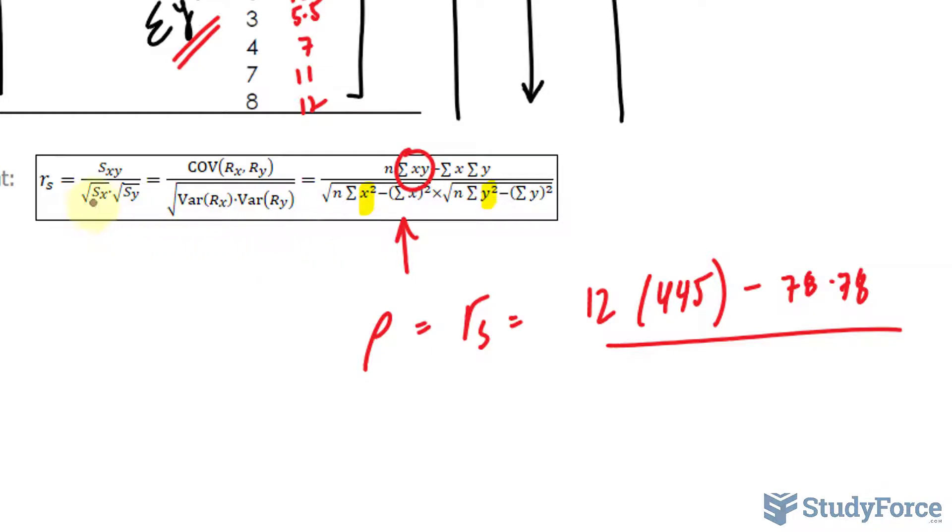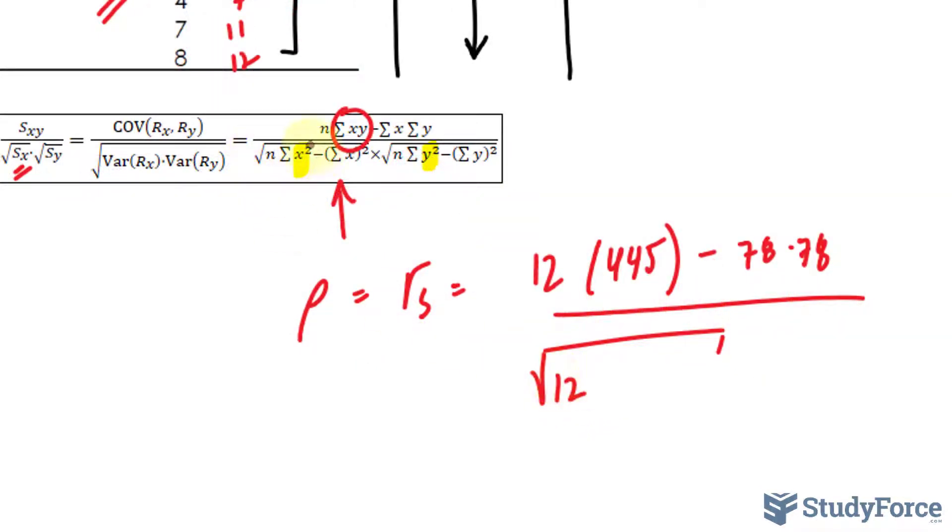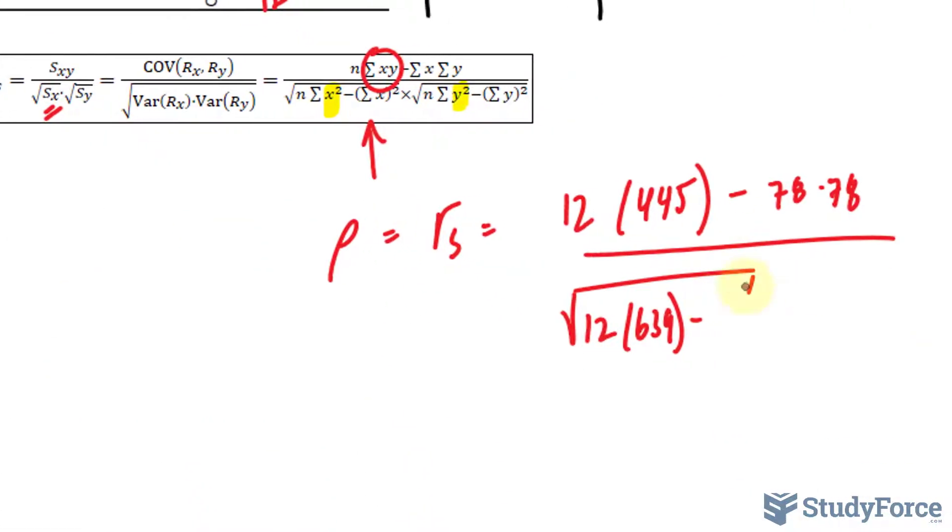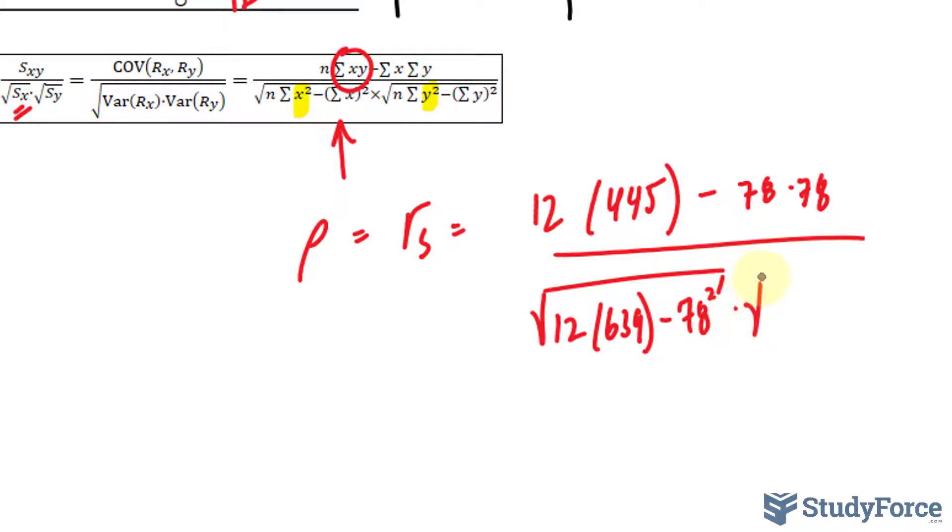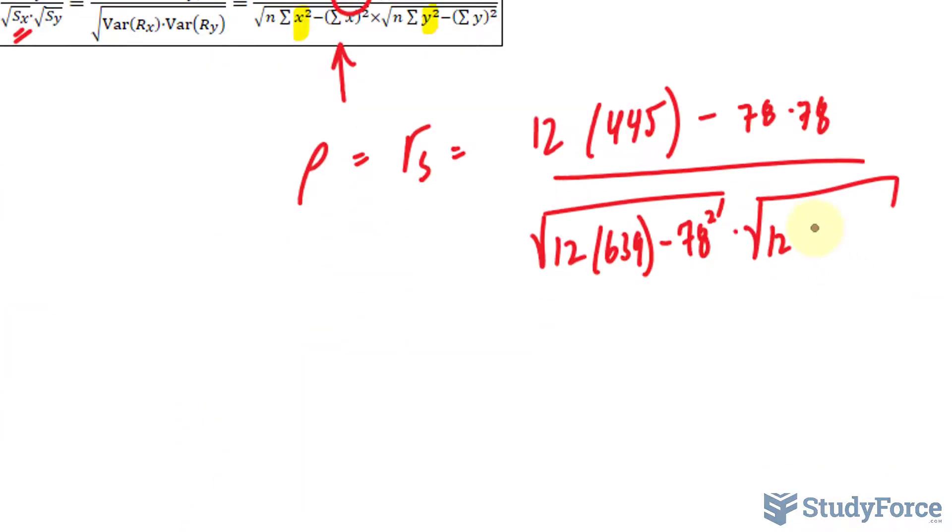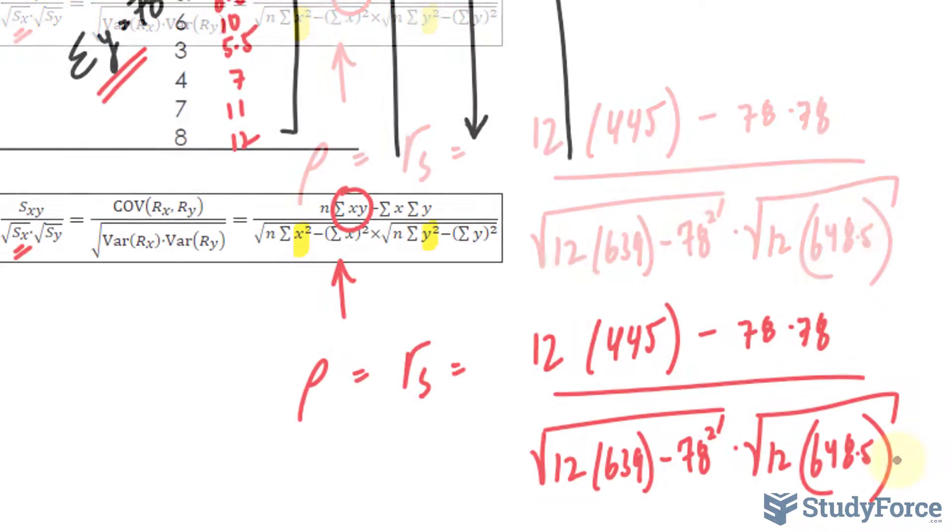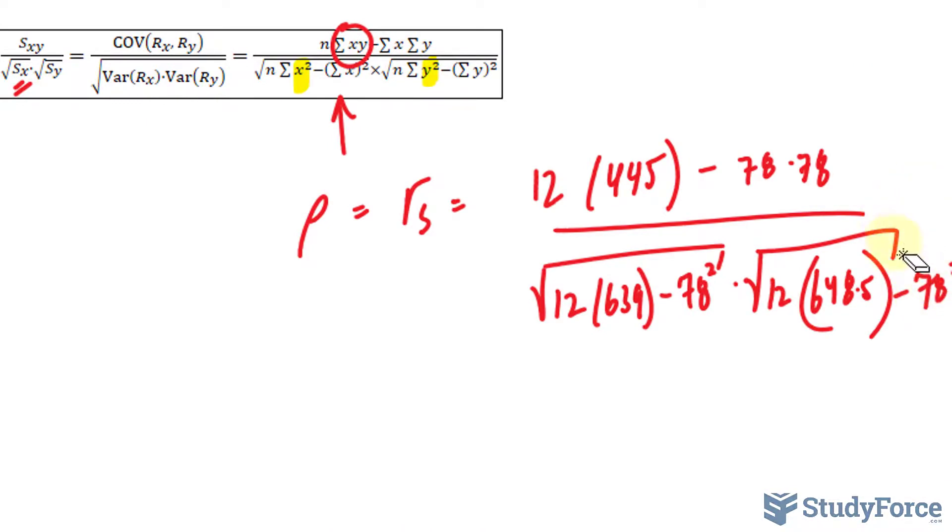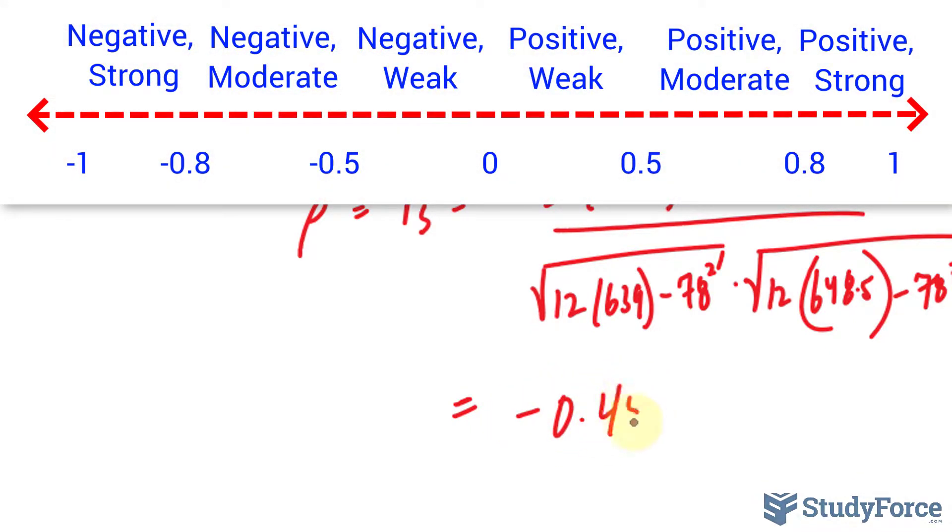Now to calculate the variance, this part we will use this formula. n is equal to 12. That was found as 639 minus 78 raised to the power of 2. Now make sure that all of that is within the square root. Putting this into your calculator, you should end up with a final value of negative 0.453.